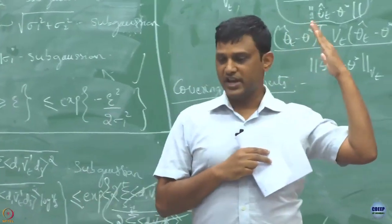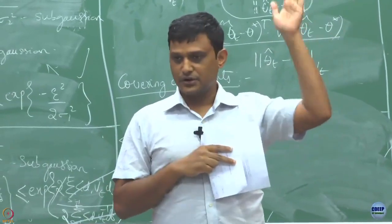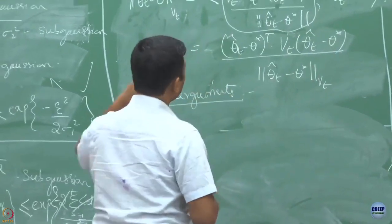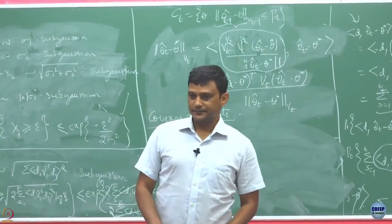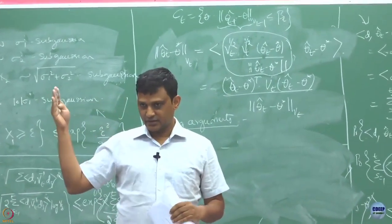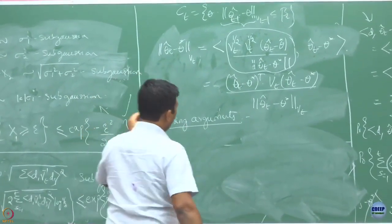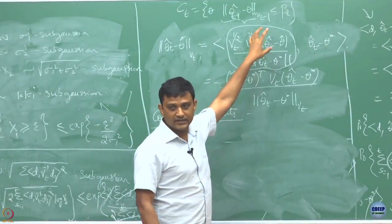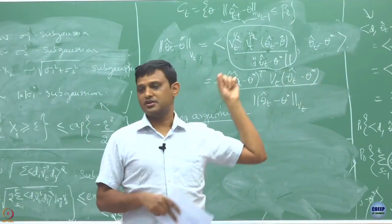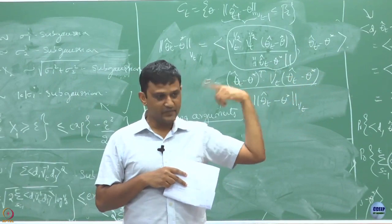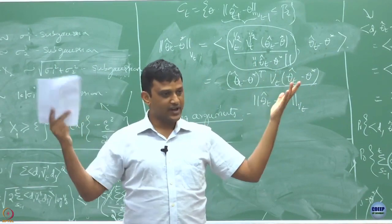Applying a union bound was okay there because the values taken by the number of pulls were only finite — that is 1, 2, all the way up to t. But here this quantity can take uncountably many values. So first what we are going to do is discretize it, and then show that for whatever value it can take, there exists a point in my discretized space that is arbitrarily close to it. Once we have discretized, we have only finitely many points in that set, and then we apply a union bound on that.